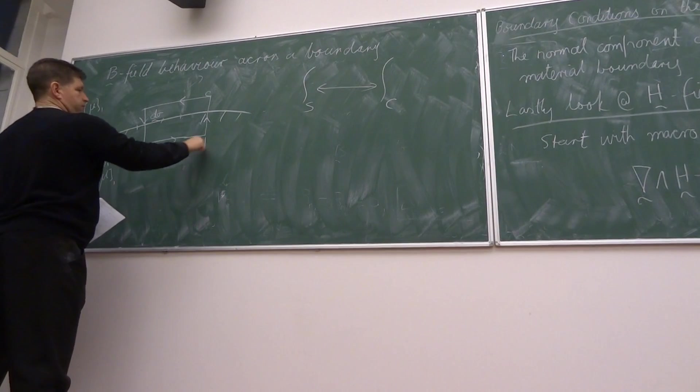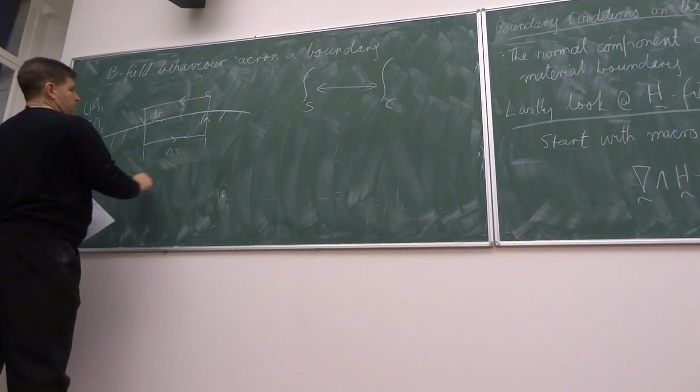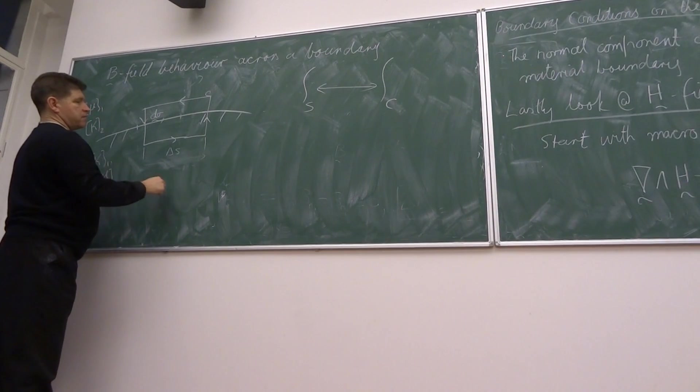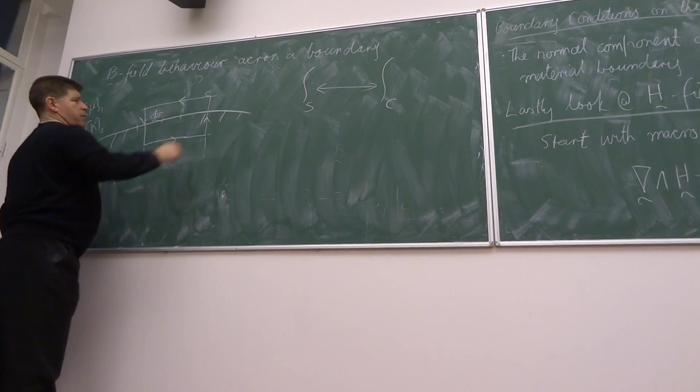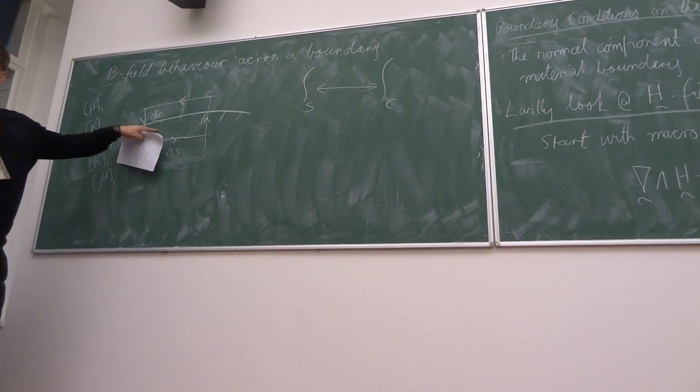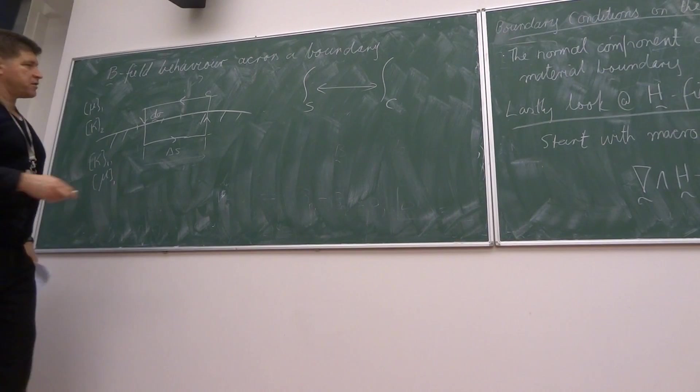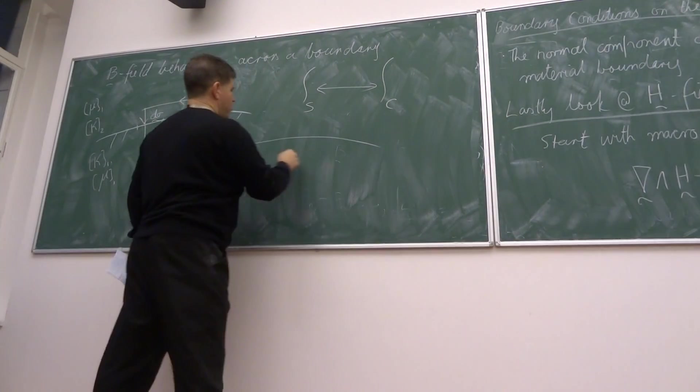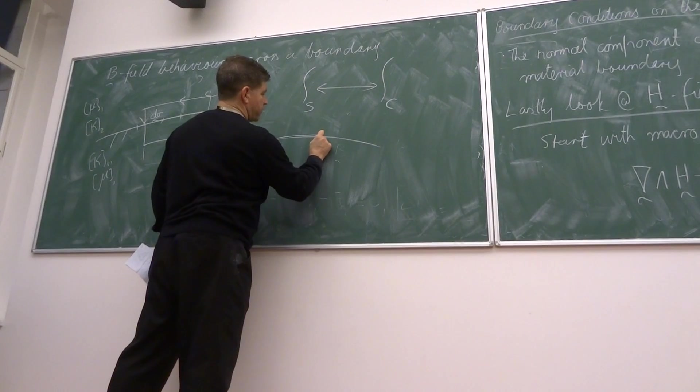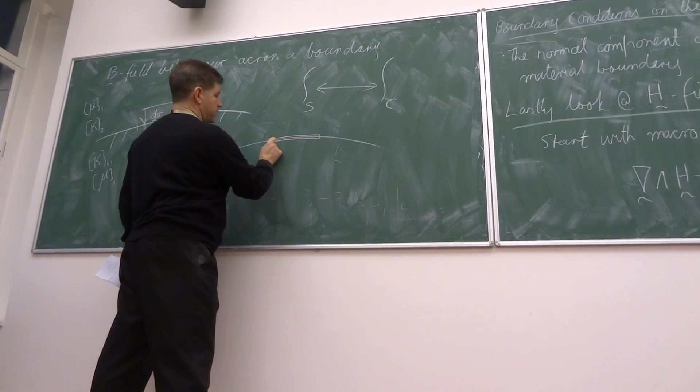And it can have a length. So it's a delta S, and again you can have a path length. But the idea is you want the action of a limit, and the limit closes down this area so that all we're considering in the end is what happens immediately over one side of the boundary compared to the other.